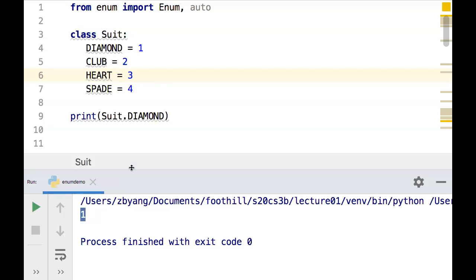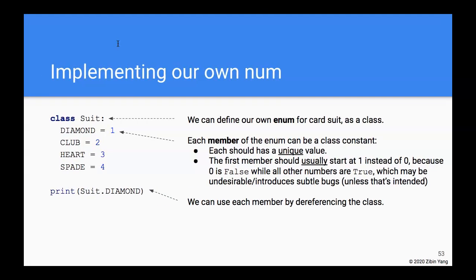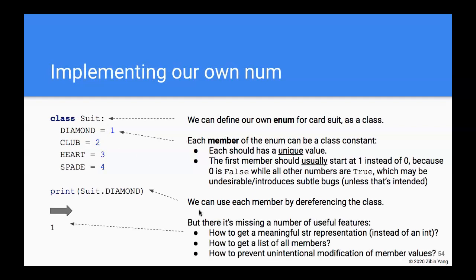It makes sense on one hand because it is the integer 1, however, if you just look at 1, it's really not very meaningful. Unless I look at the code, I can't really associate the number 1 with the suit diamond.